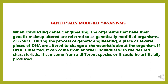Genetically modified organisms, or GMO. When conducting genetic engineering, the organisms that have their genetic makeup altered are referred to as genetically modified organisms or GMO. During the process of genetic engineering, a piece or several pieces of DNA are altered to change a characteristic about the organism. If DNA is inserted, it can come from another individual with the desired characteristics, from different species, or it could be artificially produced.